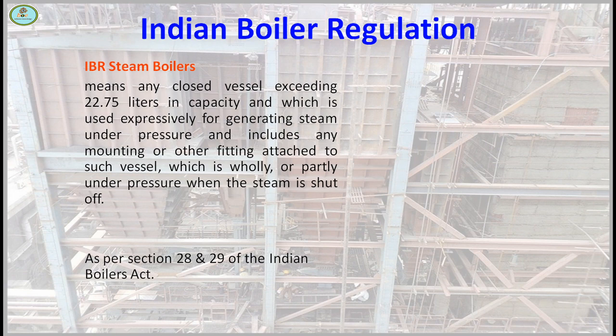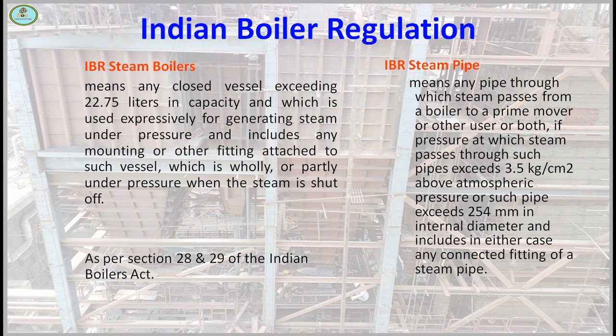As per sections 28 and 29 of IBR, an IBR steam pipe means any pipe through which steam passes from a boiler to a prime mover or other user, if the pressure at which steam passes through such pipe exceeds 3.5 kg per cm² above atmospheric pressure, or such pipe exceeds 254 mm in internal diameter, including in other cases any connected fitting of a steam pipe.